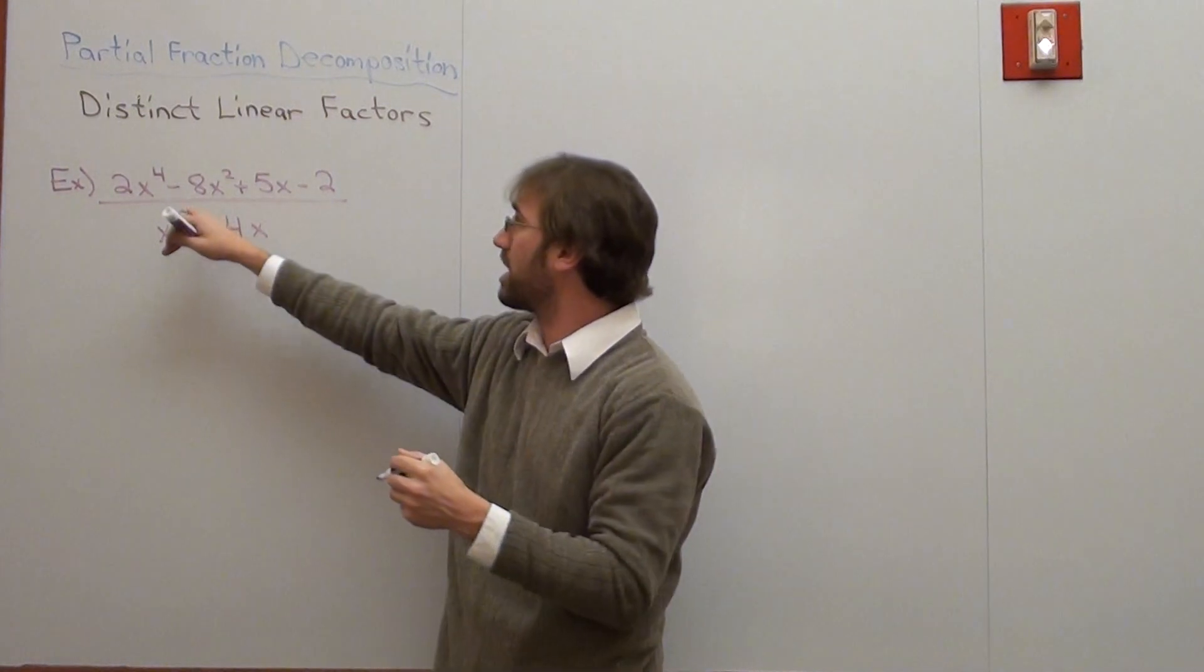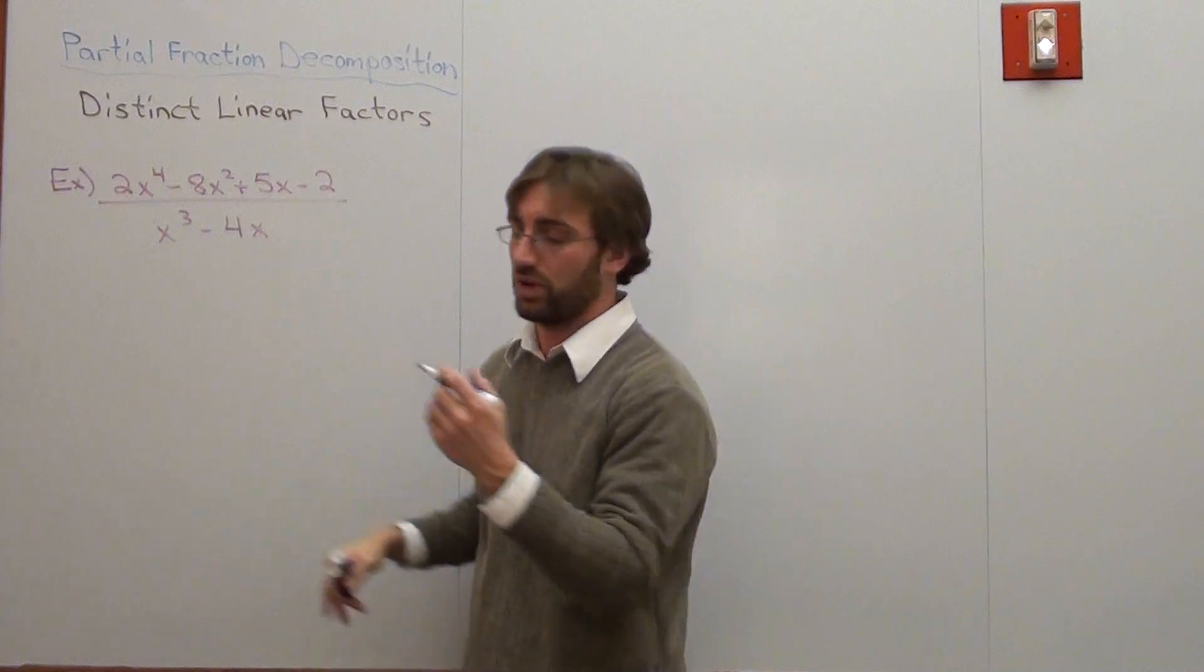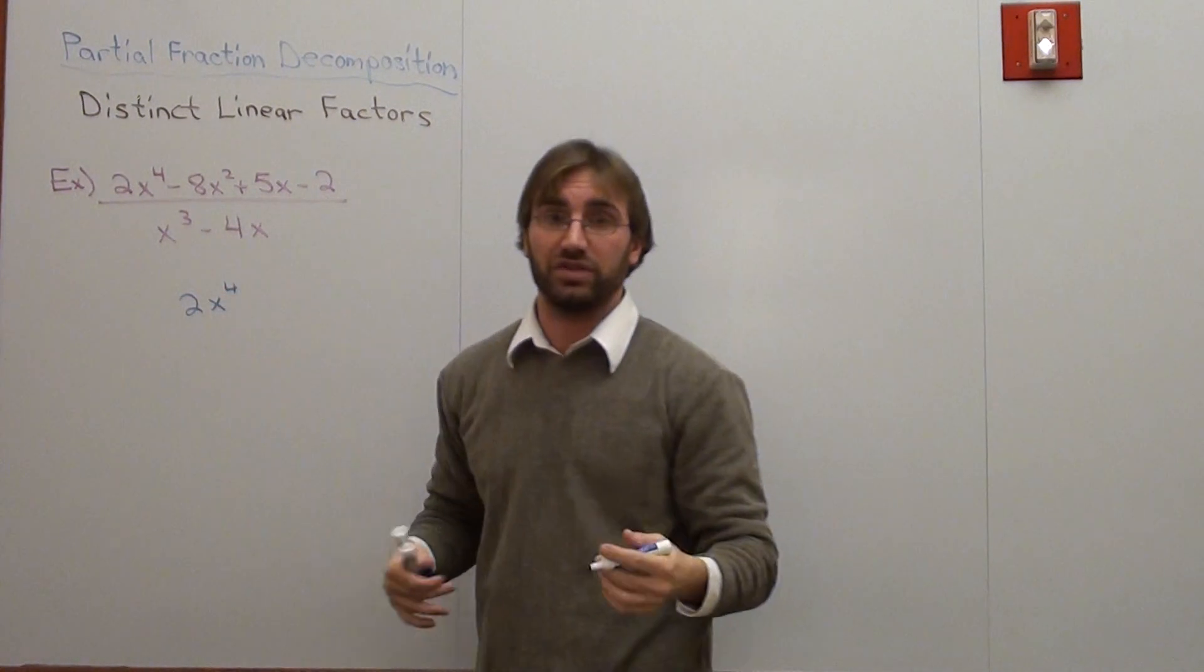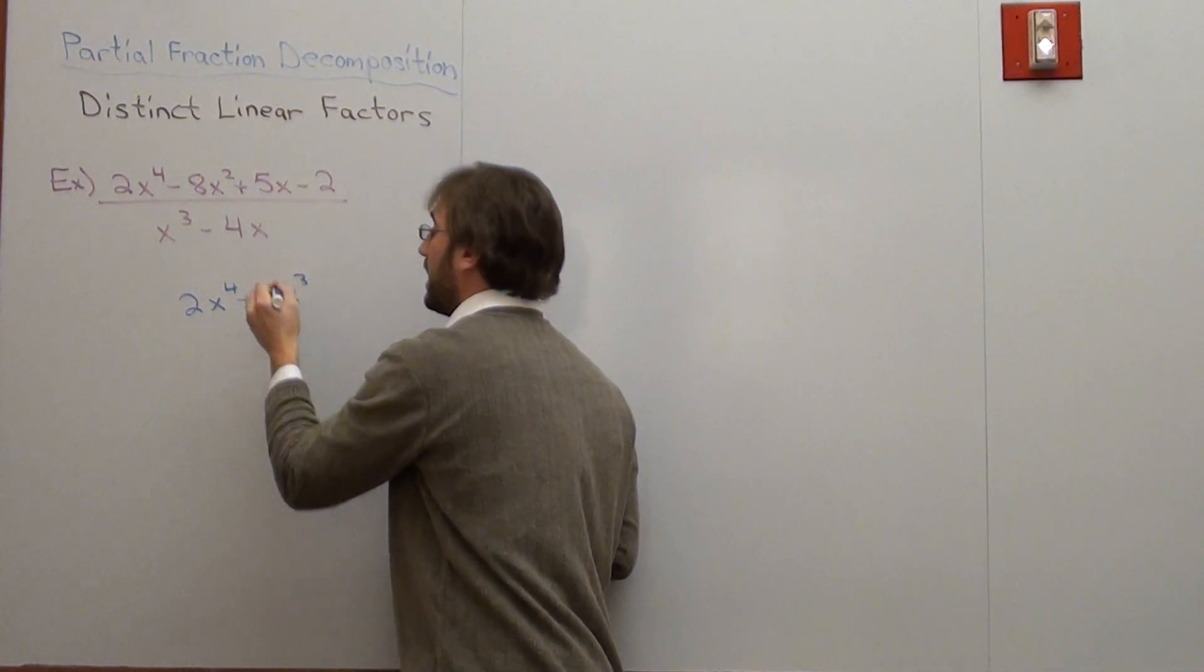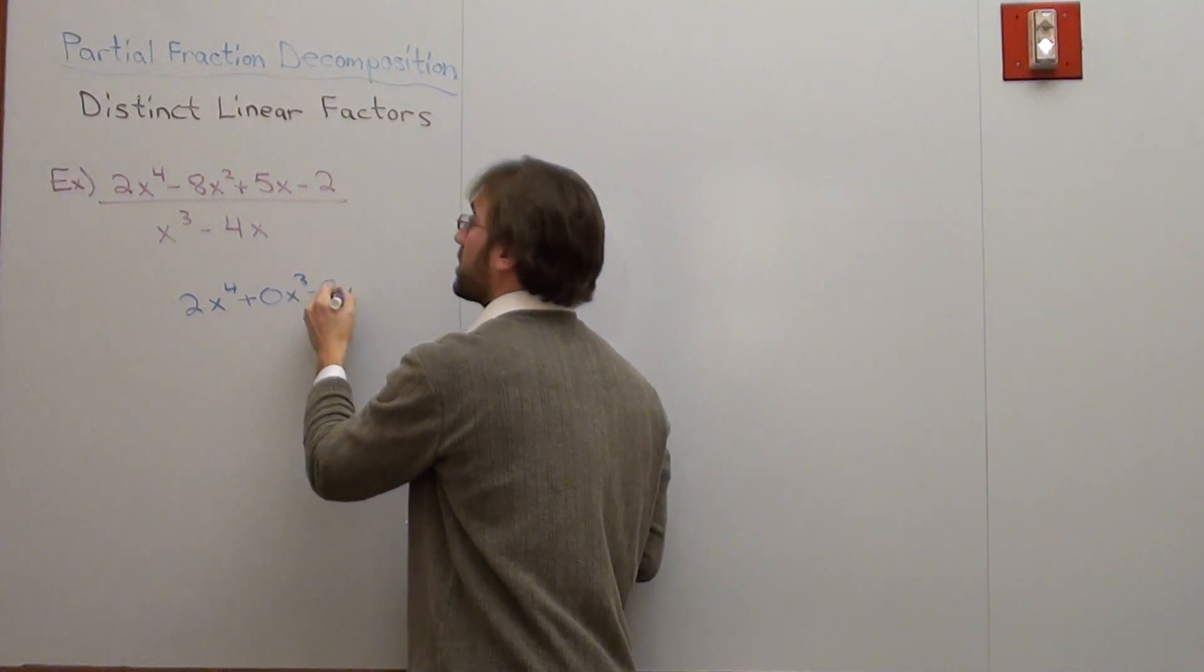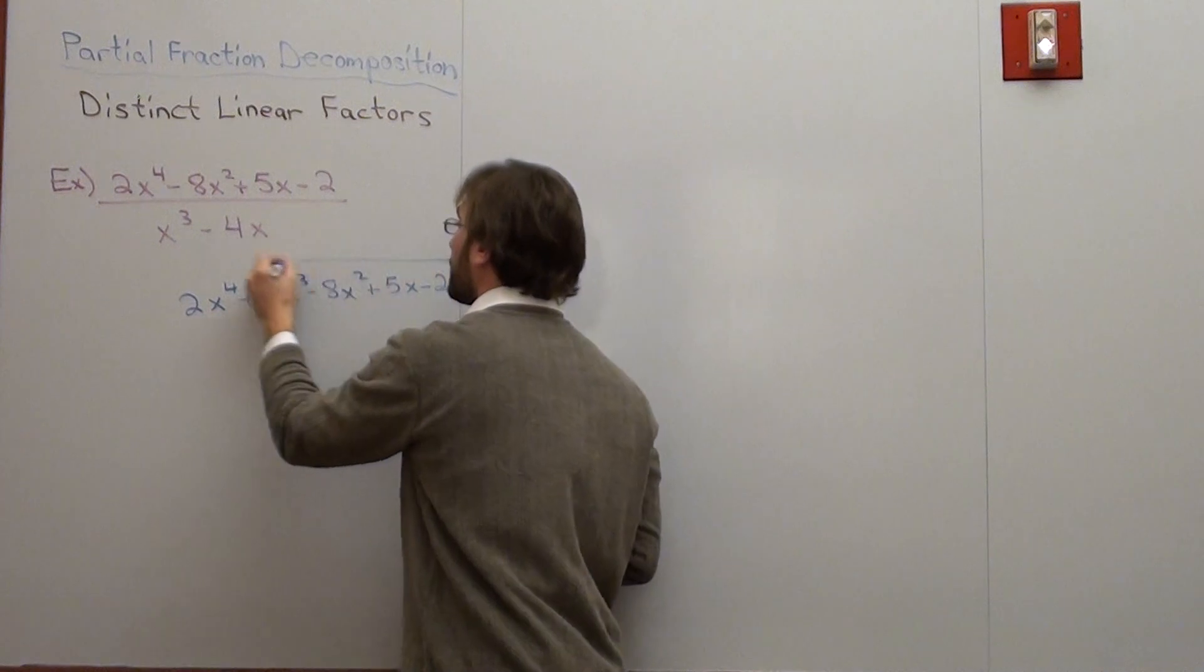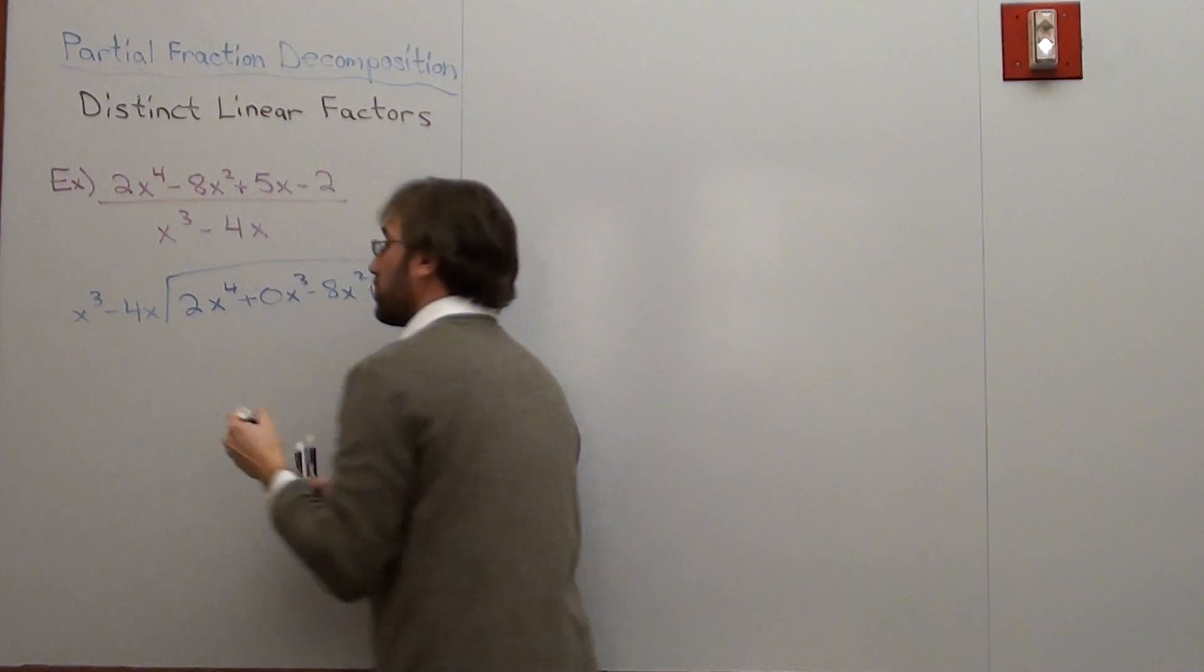So I've got 2x to the fourth minus 8x squared plus 5x minus 2. I'm going to divide that by x cubed minus 4x using long division. When I use long division, I like to make sure that every term inside, even if there was no x cubed, is accounted for. Minus 8x squared plus 5x minus 2. It's all divided by x cubed minus 4x.